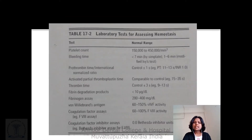Laboratory tests for assessing hemostasis include platelet count, bleeding time, prothrombin time, APTT, thrombin time, fibrin degradation products, fibrinogen assay, Von Willebrand antigen, coagulation factor assays, and coagulation factor inhibitor studies.